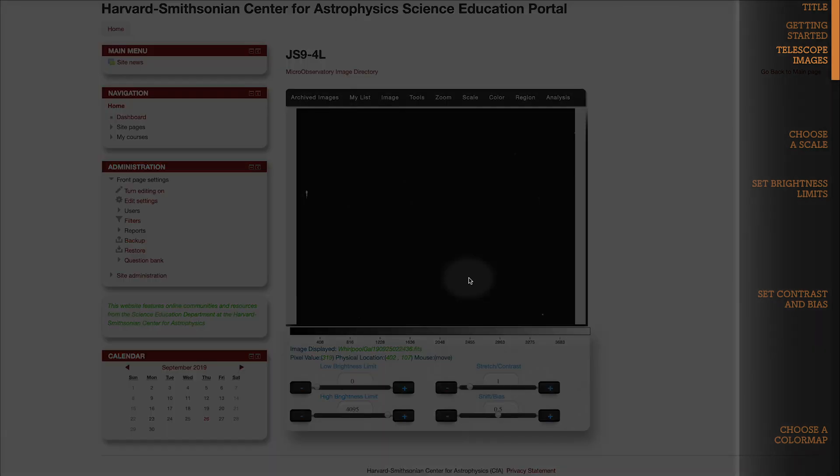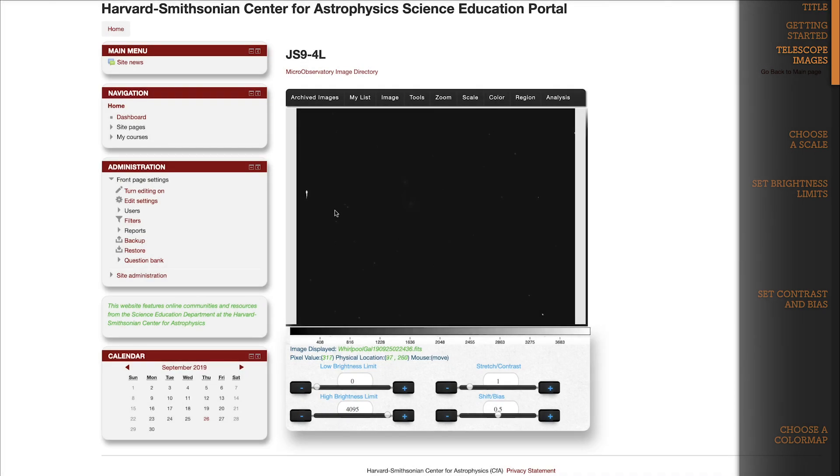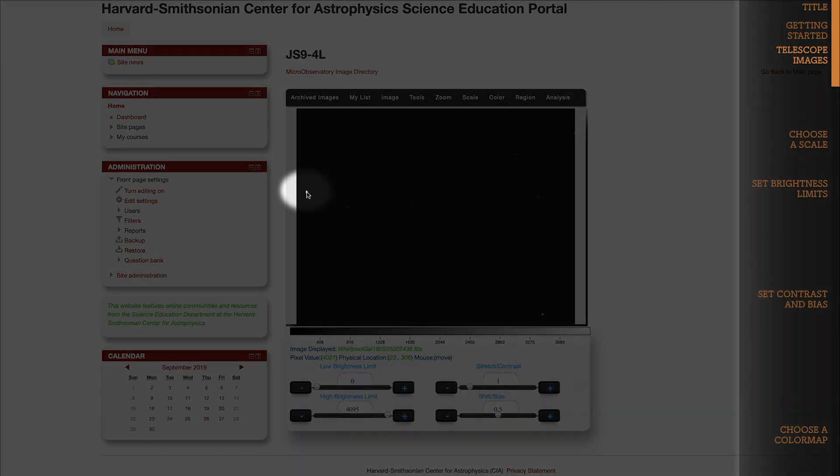Right here, in this area of darkness, this one pixel has a pixel value of 319. And over here, where this bright star is, this pixel has a pixel value of 4021.